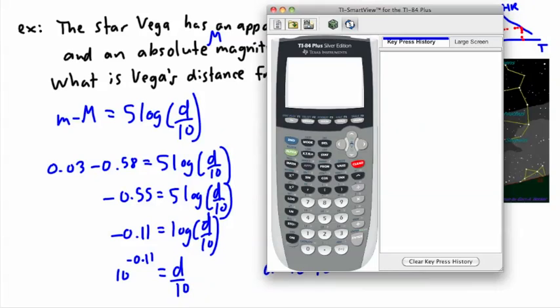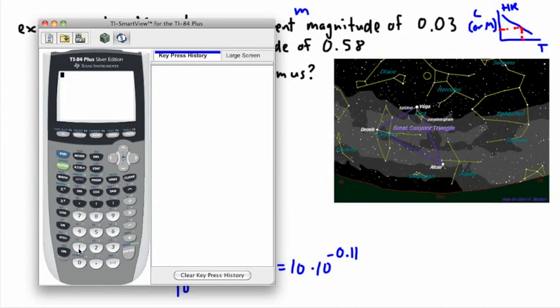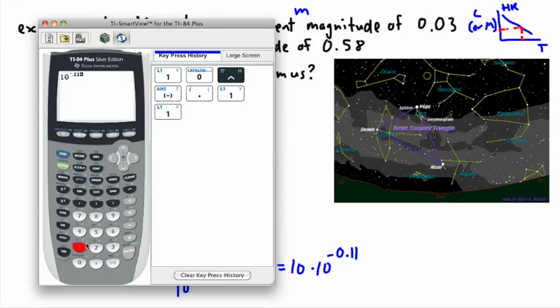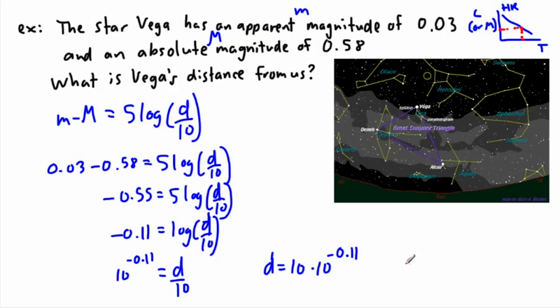So I'll get out my trusty calculator here to help me out. And I'm going to calculate that. So 10 to the power of negative .11, I'm going to try to calculate that first. I get this answer. I'm going to multiply that by 10. That's just going to move the decimal over. So I get 7.76. So that means then I get here d equals 7.76 parsec. That could be my answer.